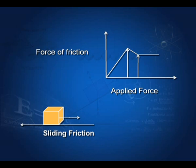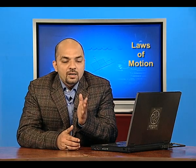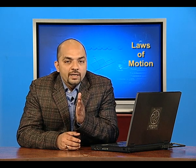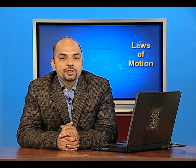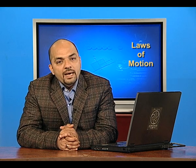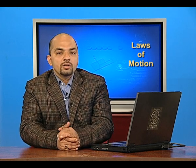Beyond the decline, the graph becomes a horizontal line parallel to the x-axis. This indicates that the force of friction is now constant. This constant force of friction is called kinetic friction. The horizontal straight line confirms that kinetic friction has attained a constant value.